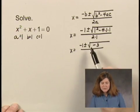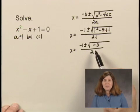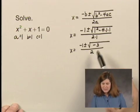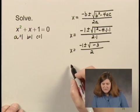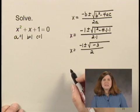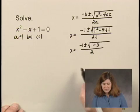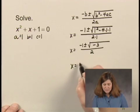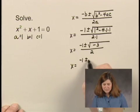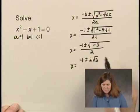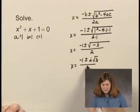Now that you see the square root of negative 3, you know that we're going to be working with complex answers here. The square root of negative 3 is i times the square root of 3. So I can write x equals negative 1 plus or minus i times the square root of 3 over 2.